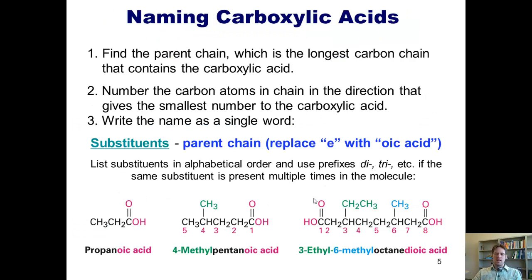I'll now guide you through the necessary steps of generating a systematic IUPAC name for simple carboxylic acids. First, we have to find the parent chain, which is the longest carbon chain that contains the carboxylic acid. Second, we have to number the carbon atoms in that chain in the direction that gives the smallest number to the carboxylic acid. In other words, the carbon in the carboxylic acid will always be position number one.